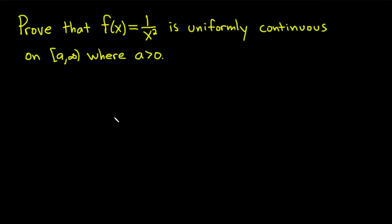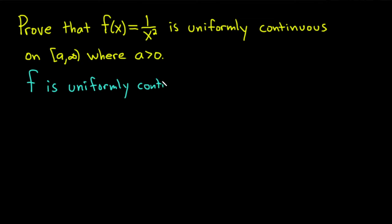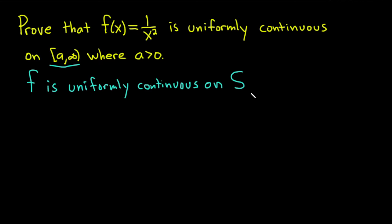Before we do this proof, let me refresh your memory on what it means for a function to be uniformly continuous. So f is uniformly continuous on some set — which I'll call s — and in our case s is going to be this specific set here, a subset of the real numbers. You could apply this to n-dimensional space as well; you can say s is a subset of R^n if you wanted to.